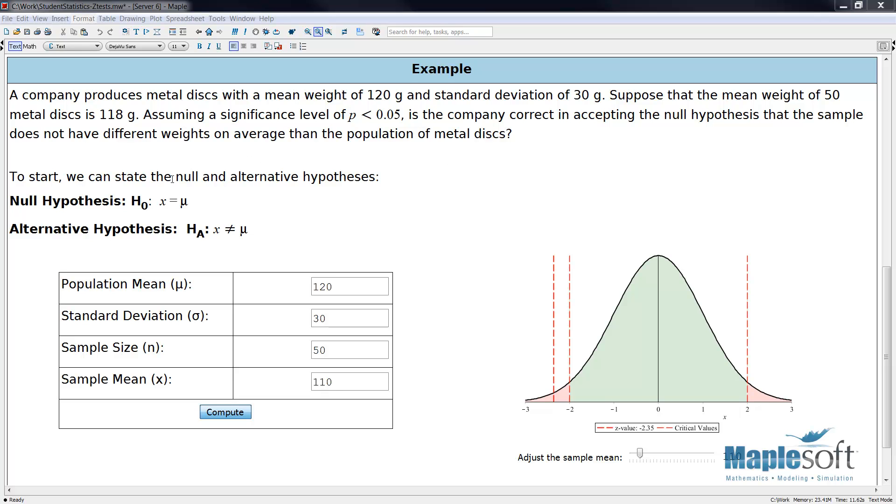To begin, we can state the null and alternative hypotheses. Our null hypothesis is that x (the sample mean) is equal to the population mean μ. The alternative hypothesis is that x is not equal to μ.